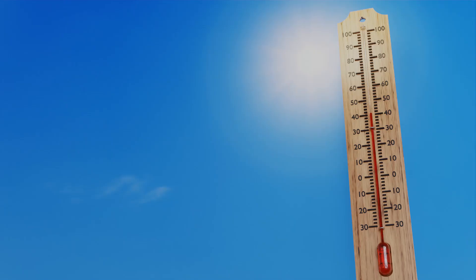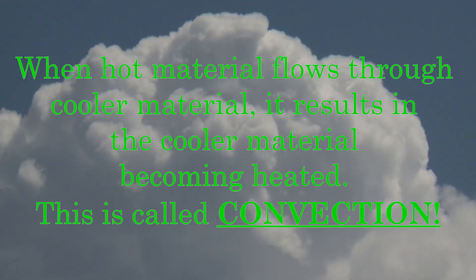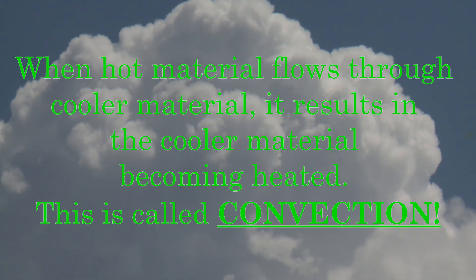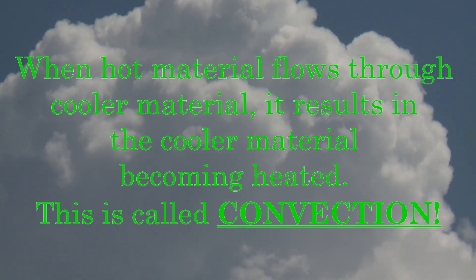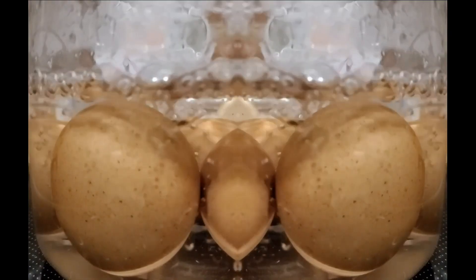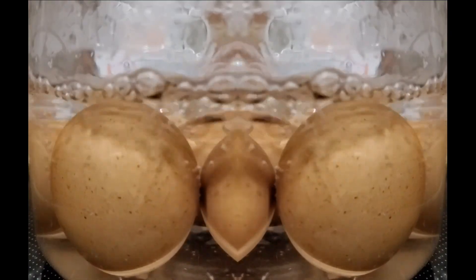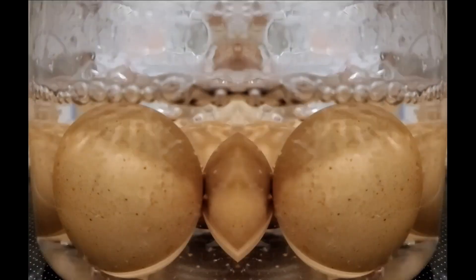Let's start with convection. This process occurs when hotter material moves towards cooler areas, displacing the cooler material and causing heating. An example of this is boiling water in a pot. The hotter water at the bottom rises to the surface, carrying heat with it. This causes the contents of the pot to heat up and cook. The cooler water then falls to the bottom and is heated, restarting the cycle.